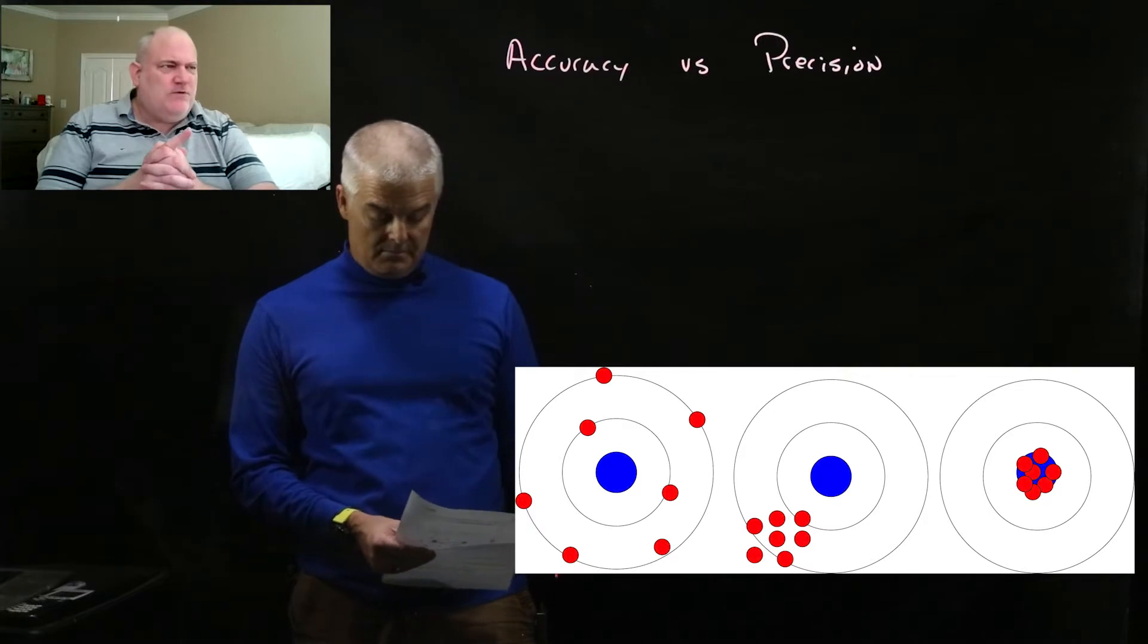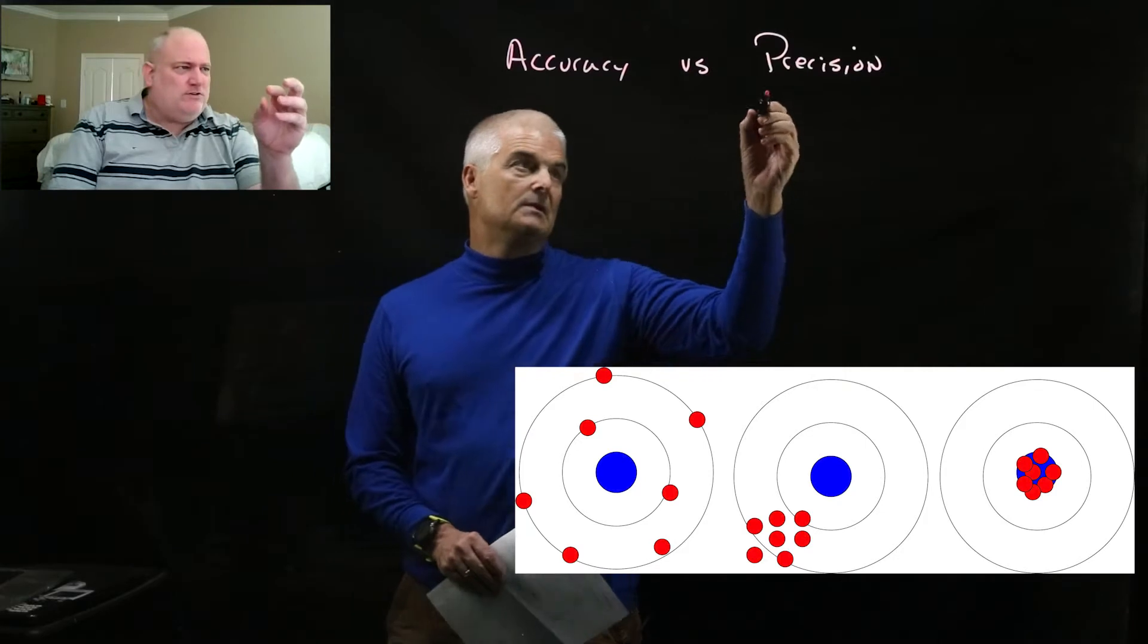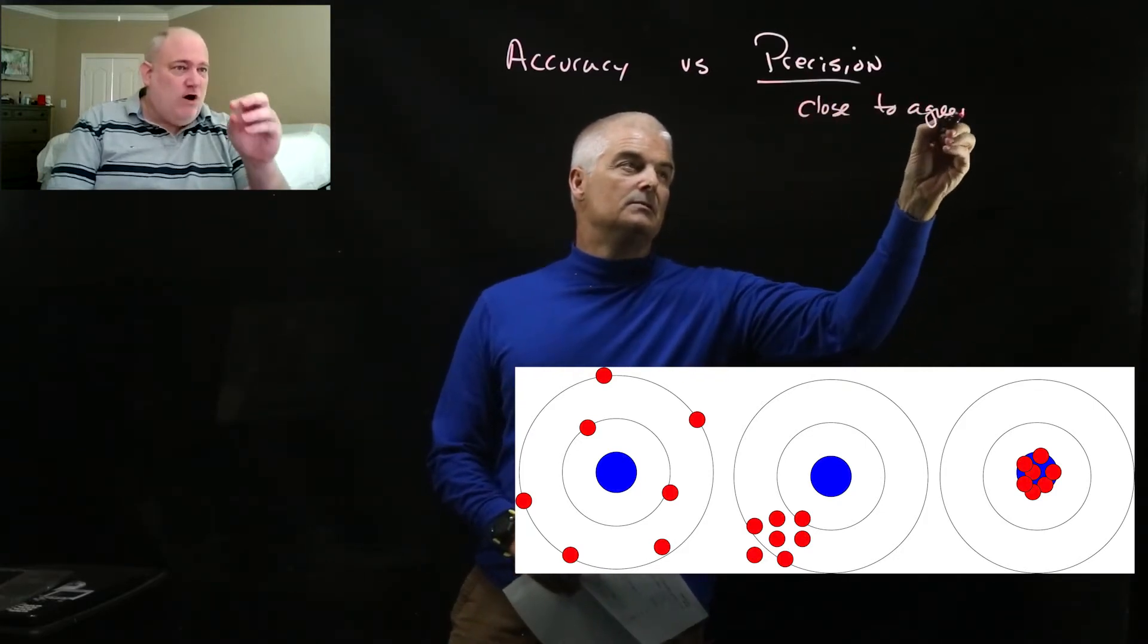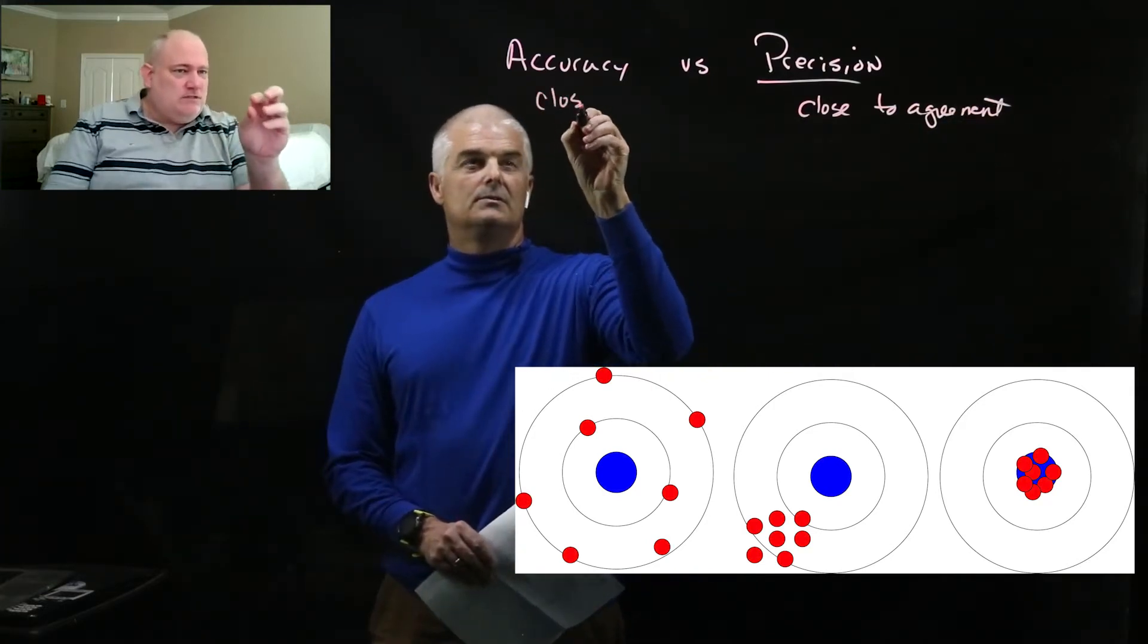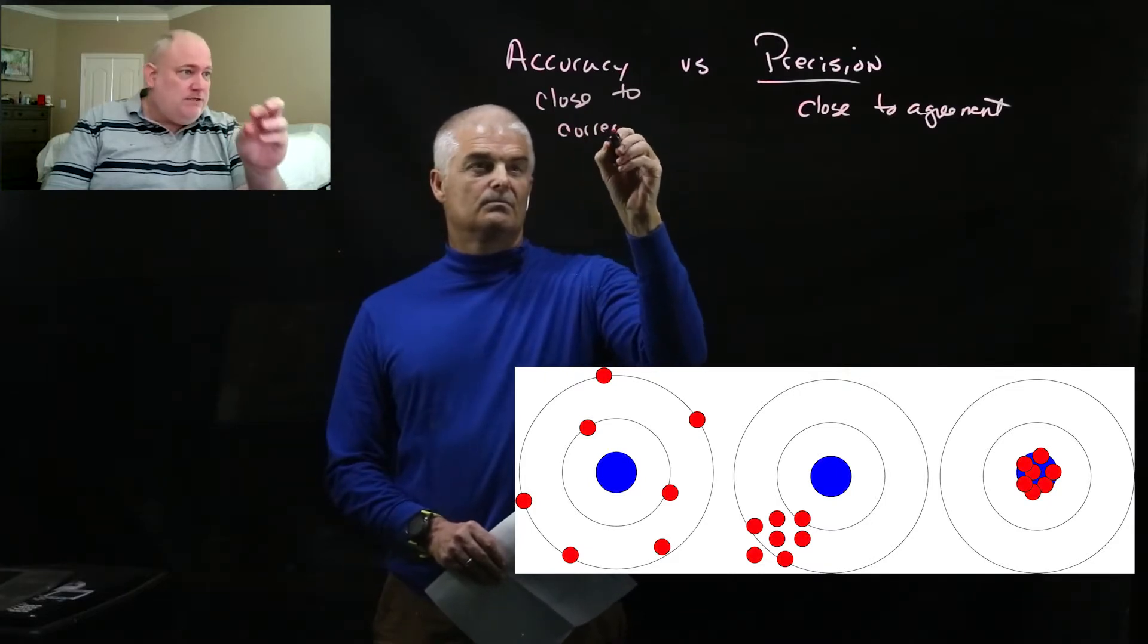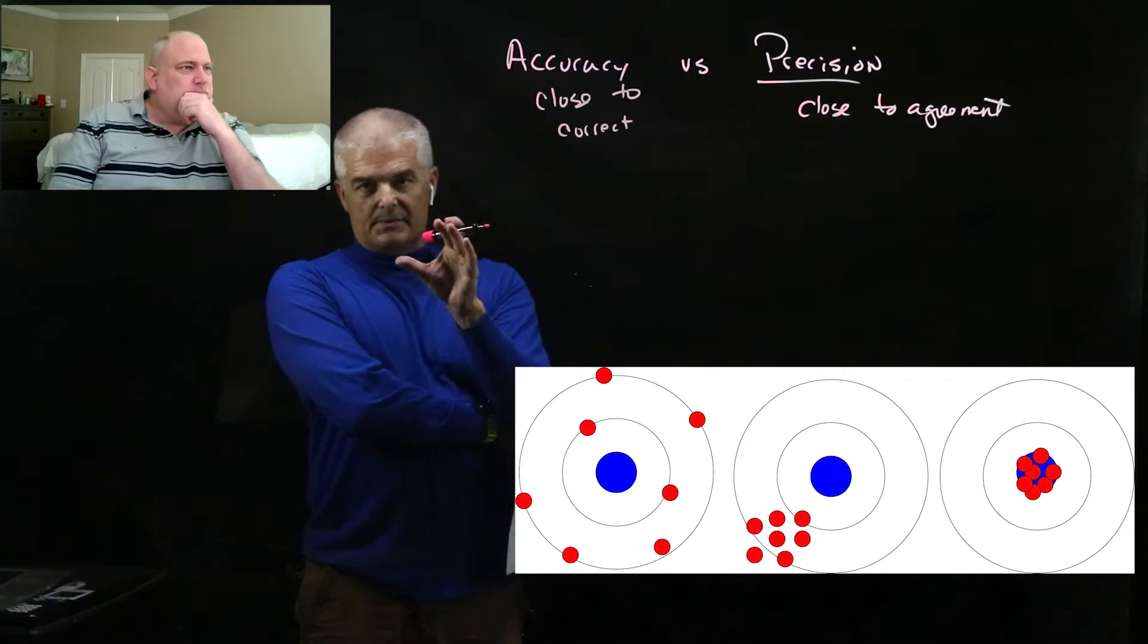By the way, precision is kind of weird because people sometimes think that accuracy and precision is the same thing. Precision is how close you are to agreeing with your measurements. So you can be precisely wrong, which is exactly what happens if you look at the second diagram. All of those targets are very close to each other, so they all agree with each other, but they're wrong.